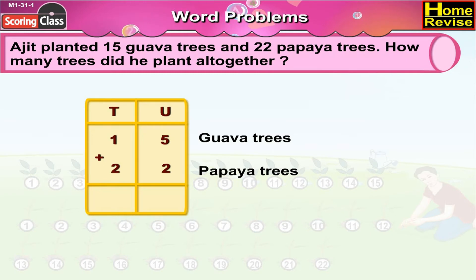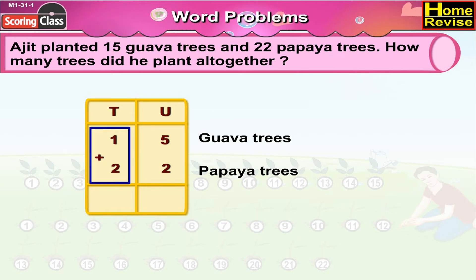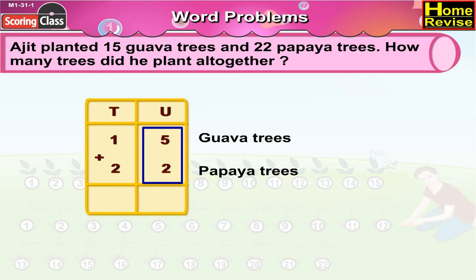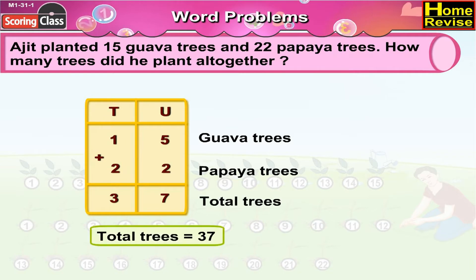Let us arrange them. Under units, write 5 and 2. Under tens, write 1 and 2. Now let us begin addition under units. 5 plus 2 is 7. 1 plus 2 is 3. So, total trees are 37.